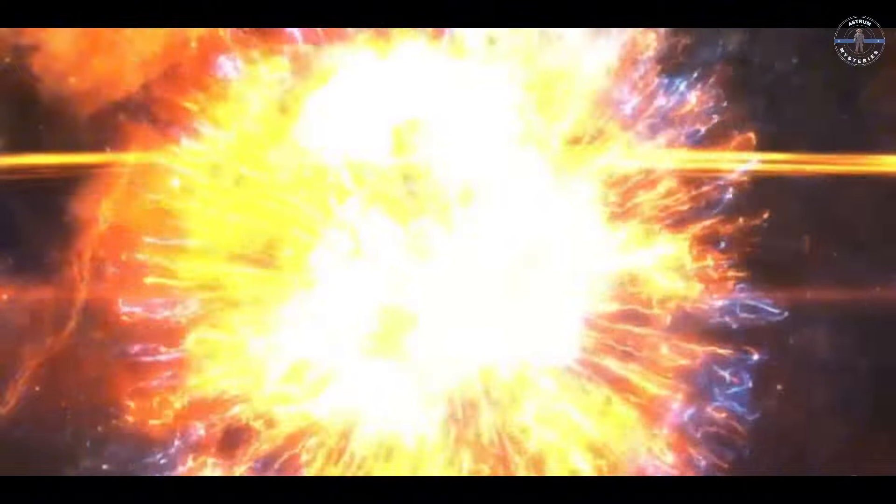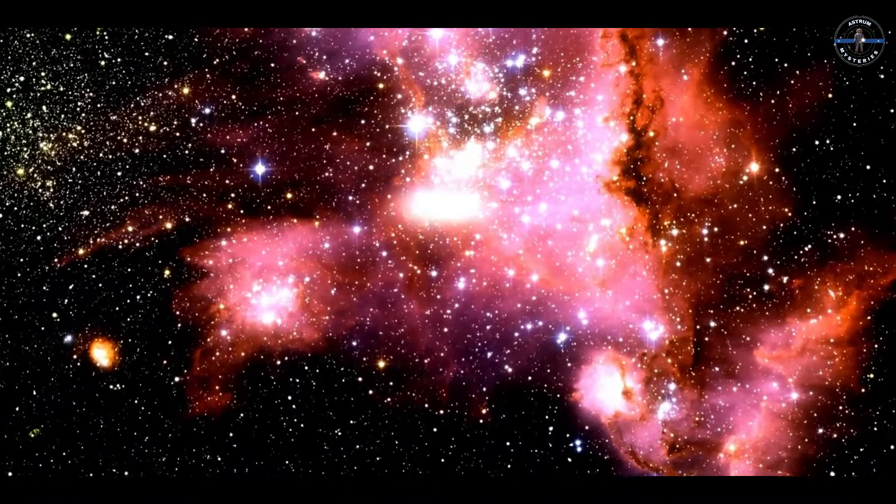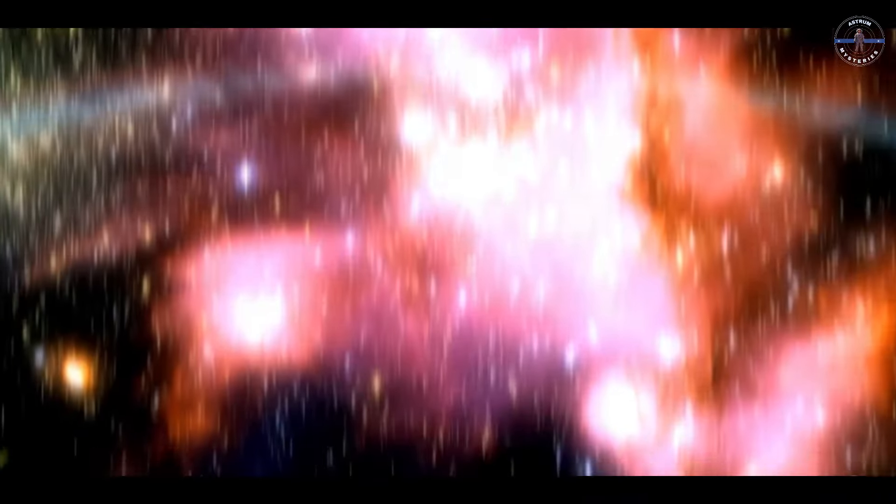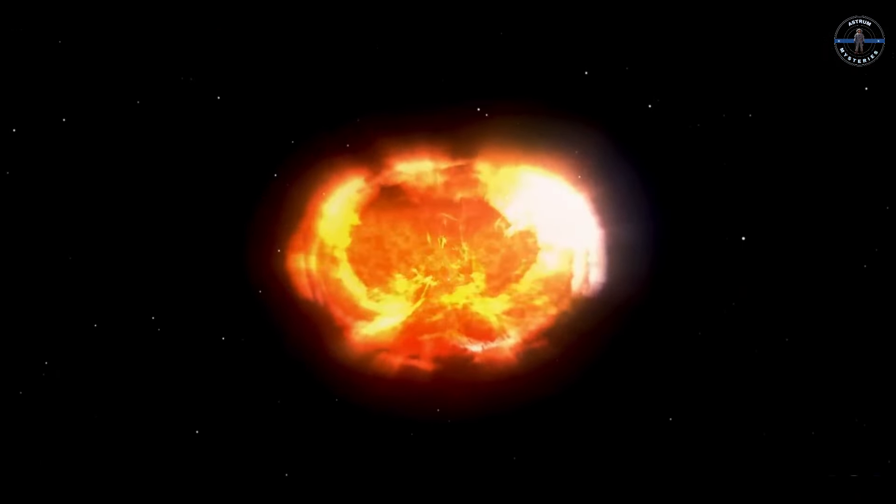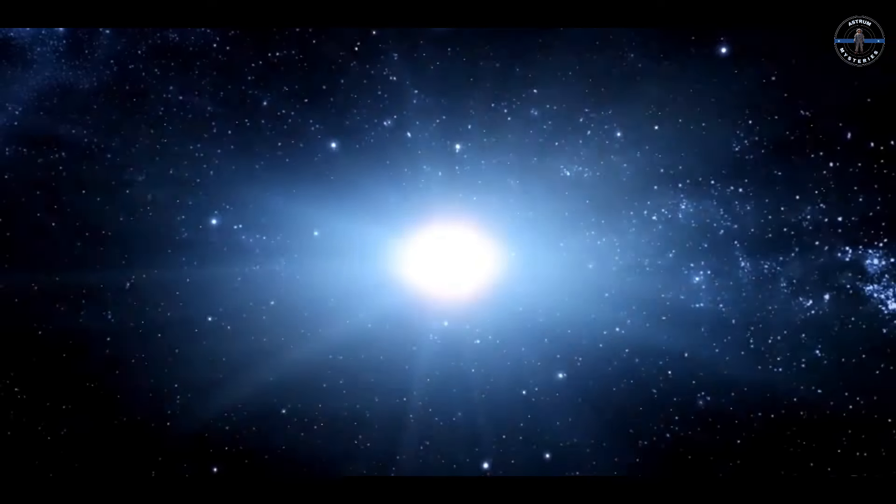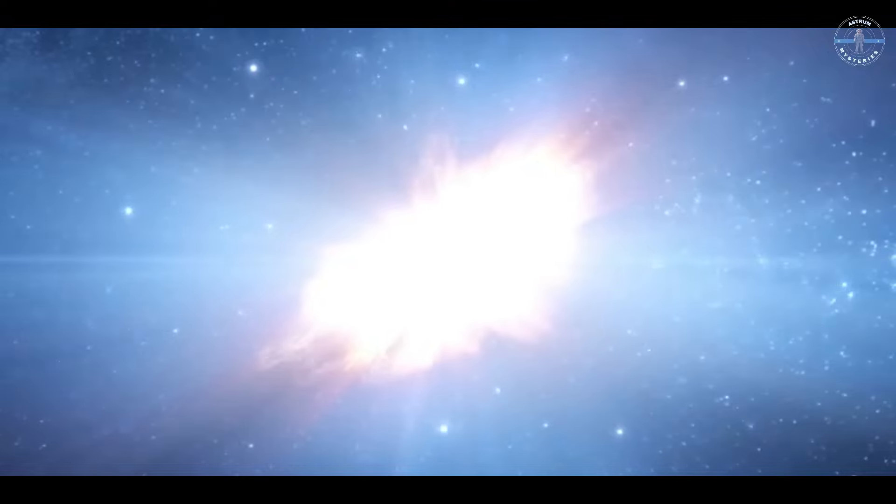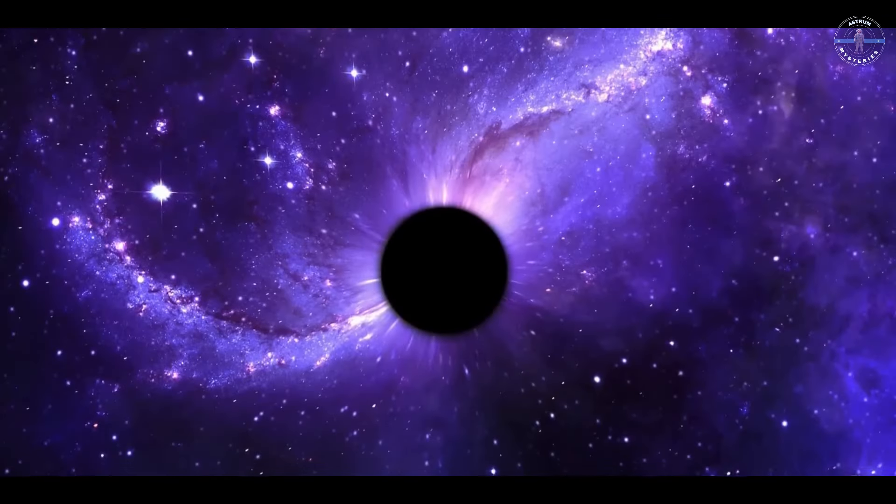Here's where the real mystery kicks in. Scientists expected the black hole to have formed with an explosive supernova that would send this outer star flying off. But the tranquil setup we see suggests otherwise. Rather than a chaotic explosion, this black hole may have gently fallen into existence, a quiet, massive collapse into darkness, unlike anything we've seen before.